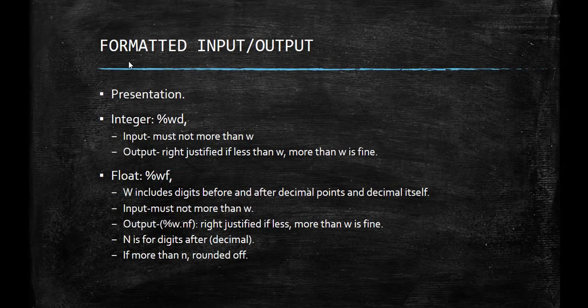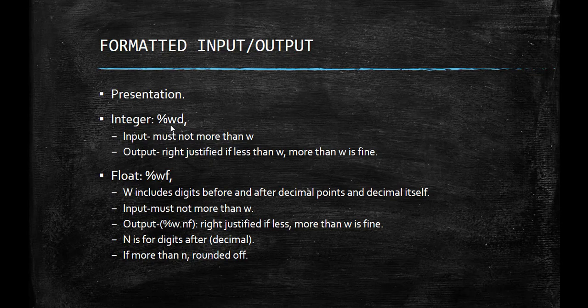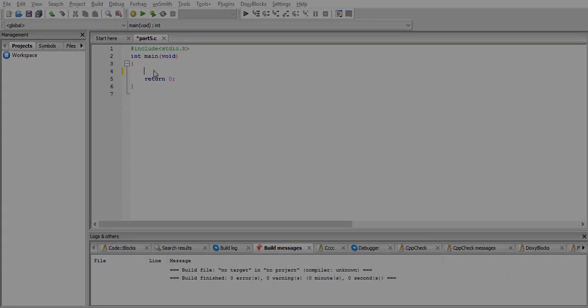So what does this formatting of input output mean here? It means that data will be formatted for the purpose of presentation. Here we use W, which stands for the width of input or output, and it comes between the format specifier.